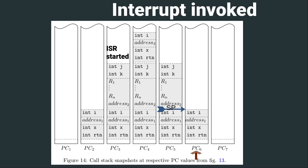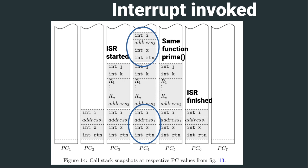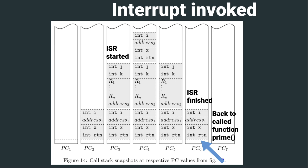Of course we can have interrupts call other functions, even functions that are already executing on the stack. Due to the nature of the stack we can have reentrant functions with no problem, as they are not aware of each other. We can have a function executing and then have an interrupt invoked that calls the same function again - no problem. The processor loads a new stack frame so that function on top of the stack is separate from the one below. When the interrupt and its function finish, we return to the original function and continue as if nothing happened. This is in a nutshell how a program works with and without interrupts.